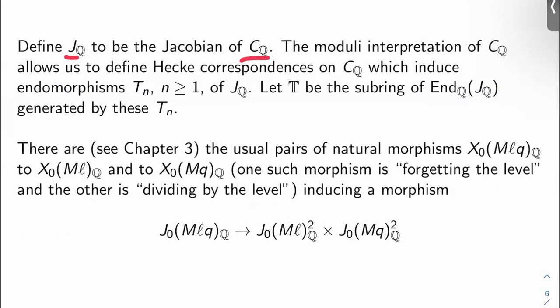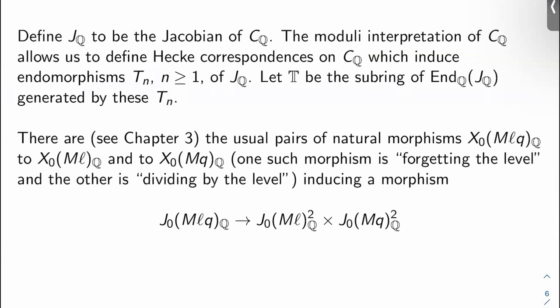Okay, let J_q be the Jacobian of C_q. The moduli interpretation of C_q I just gave you allows me to define Hecke correspondences on C_q, surprise, which induce endomorphisms T_n of J_q. So again, we have a Hecke action moving up to the Jacobian, no surprise. Let T be the subring of Q endomorphisms of J_q generated by these T_n's. Again, the T_n's can be actually thought of as endomorphisms over Q again, not just over C.